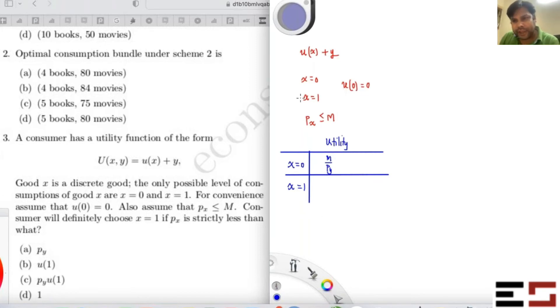And if you buy one unit of X, your utility will be u(1). Obviously you have already bought one unit of X. So how much money are you left with? M minus P_X. You're left with this much money and you spend this much money on Y. That's your utility.